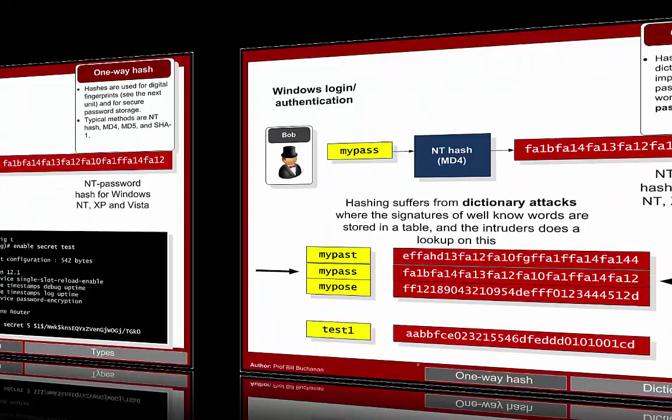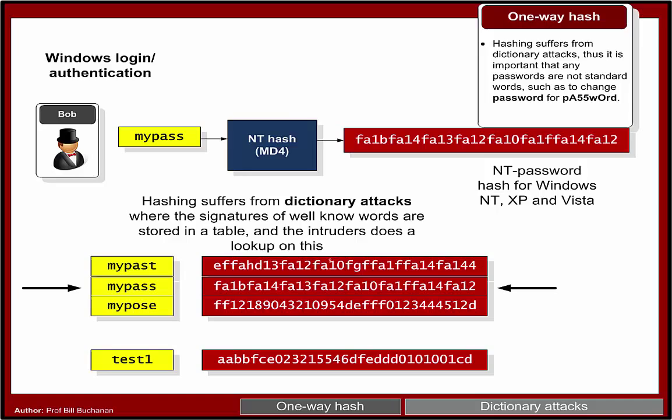The way an intruder will crack a hashed value is by running what's called a dictionary attack, where the intruder converts words from a standard dictionary into hashed values. They then compare the output values with the one they're looking for and match them up. In this way they don't actually reverse the hash, but instead create hashed values for equivalent words.